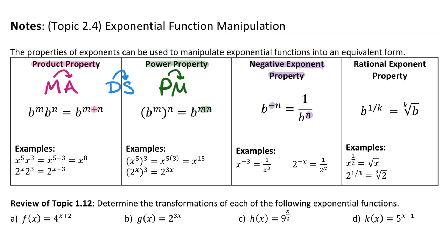The last exponent property is called the rational exponent property or the radical property of exponents. If you have a fractional exponent, you can rewrite that as a root where the denominator of the fraction is the type of root you are taking. For example, x to the one-half power is a square root — there's a two as your index. If you have two to the one-third power, since three is the denominator, that is the cube root of two. Whatever the denominator of that power is, that becomes the root of the radical.